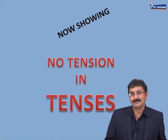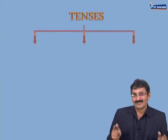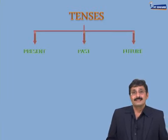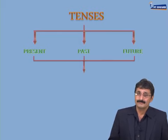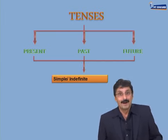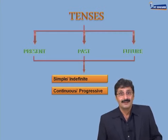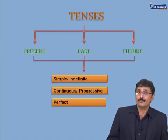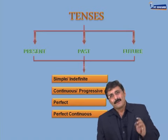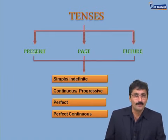Are we ready everybody? There are 12 tenses in the English language. The three simple tenses — also called indefinite tenses: simple present, simple past, simple future. The three continuous tenses: present continuous, past continuous, future continuous — also called progressive tenses. The three perfect tenses: present perfect, past perfect, future perfect. And finally the three perfect continuous tenses: present perfect continuous, past perfect continuous, future perfect continuous — also called 'belpuri' tenses!